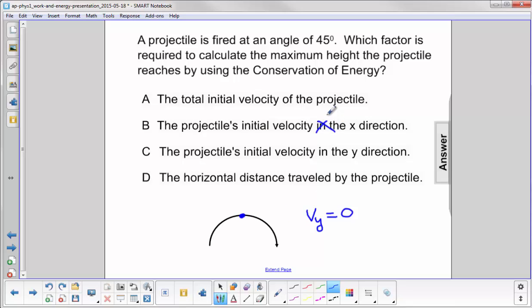We don't care about the x direction. We don't care about the total initial velocity because that has an x and y component. The horizontal distance is not relevant here.